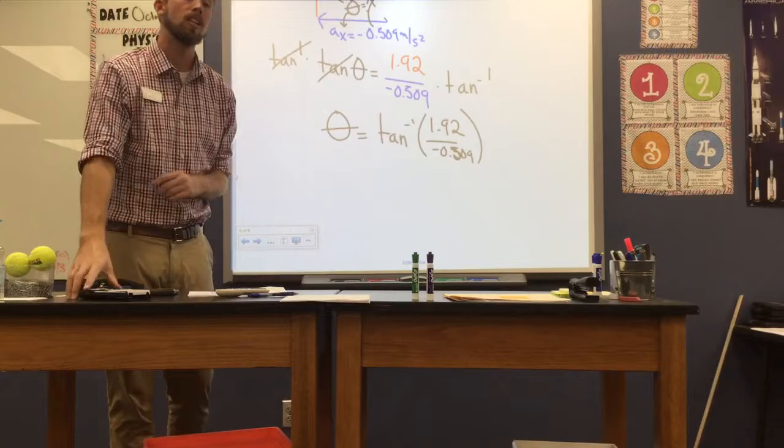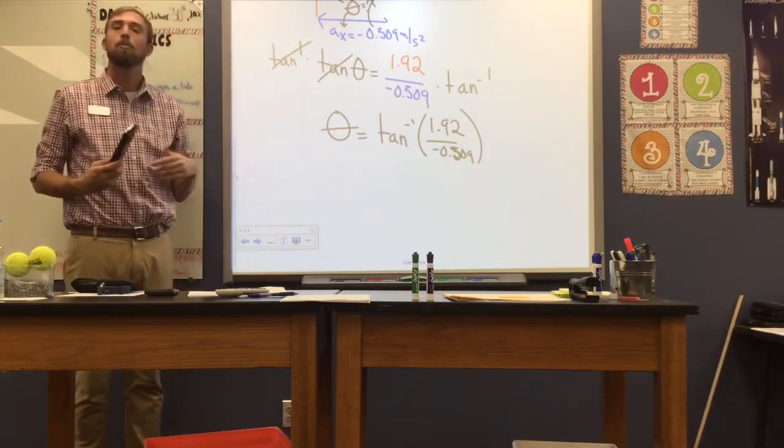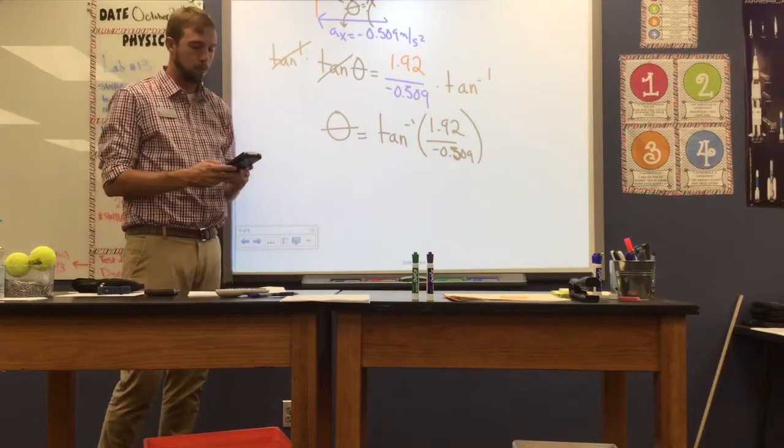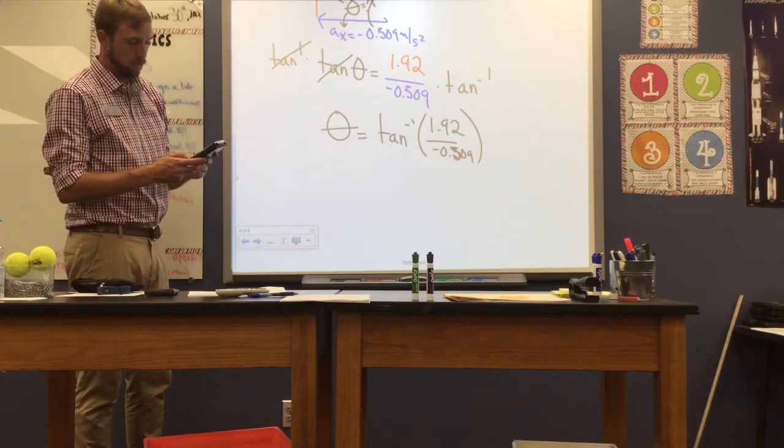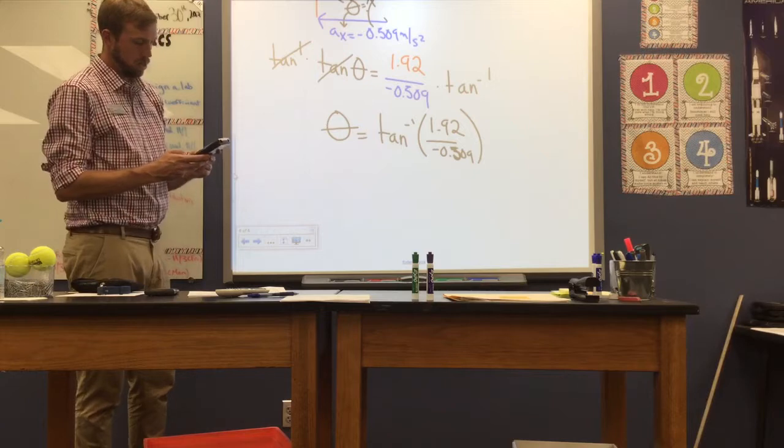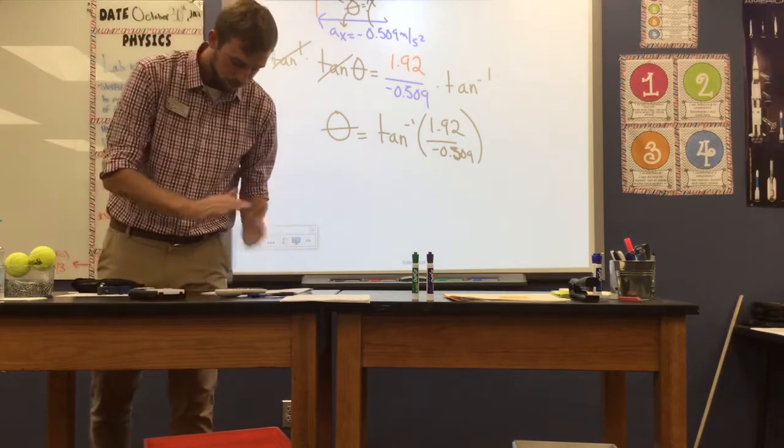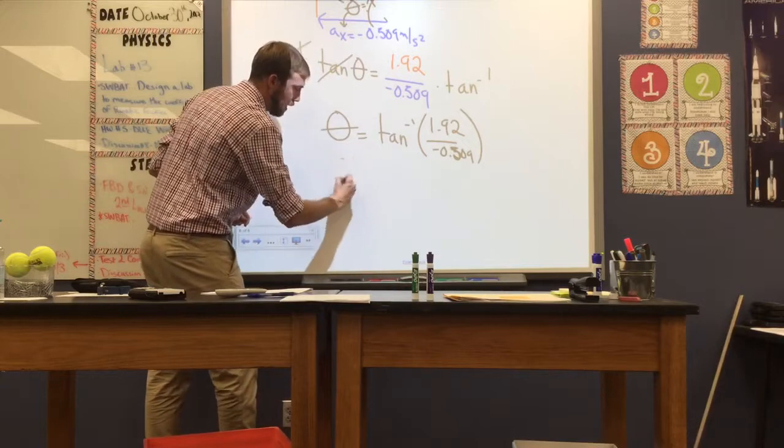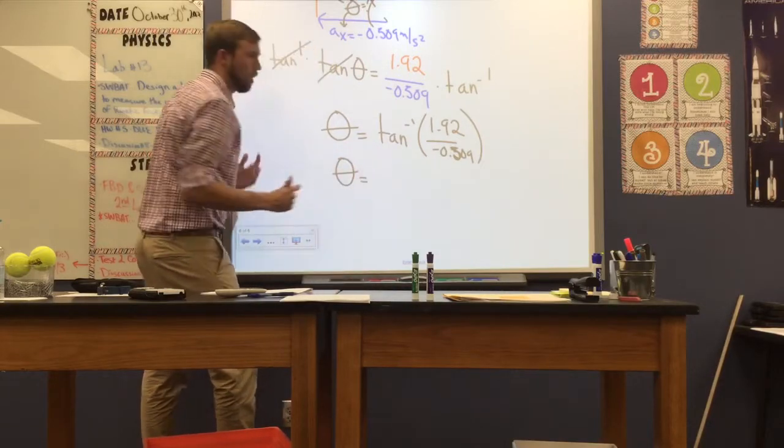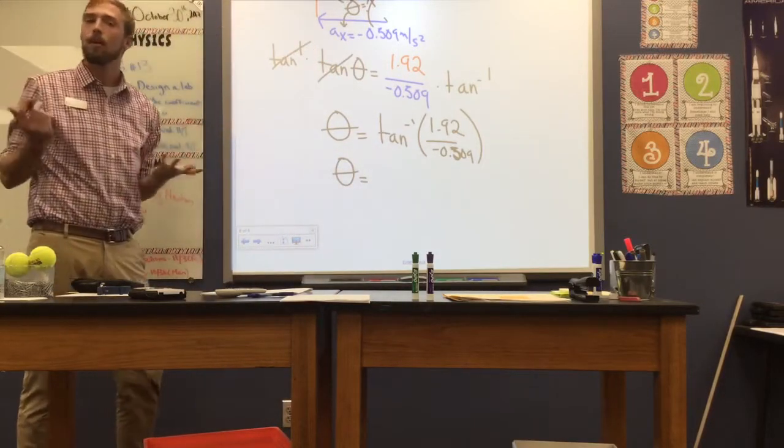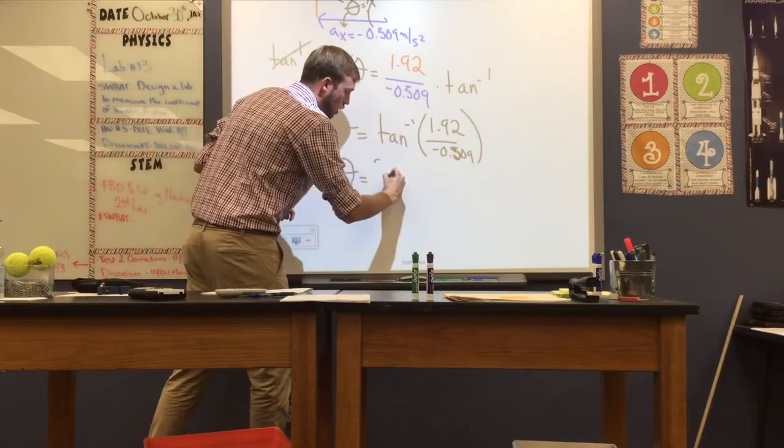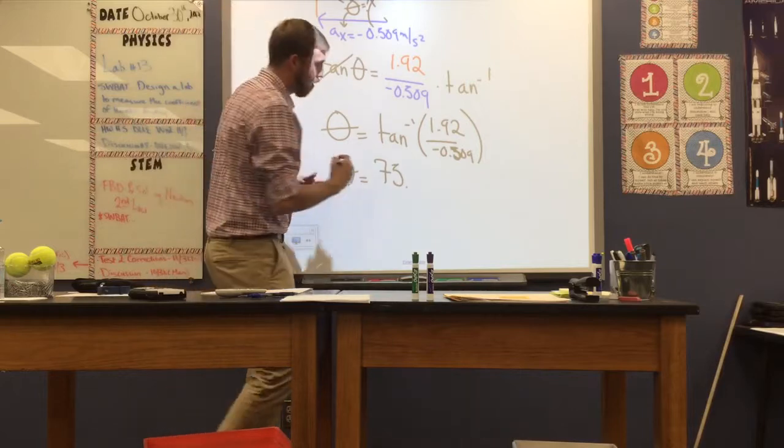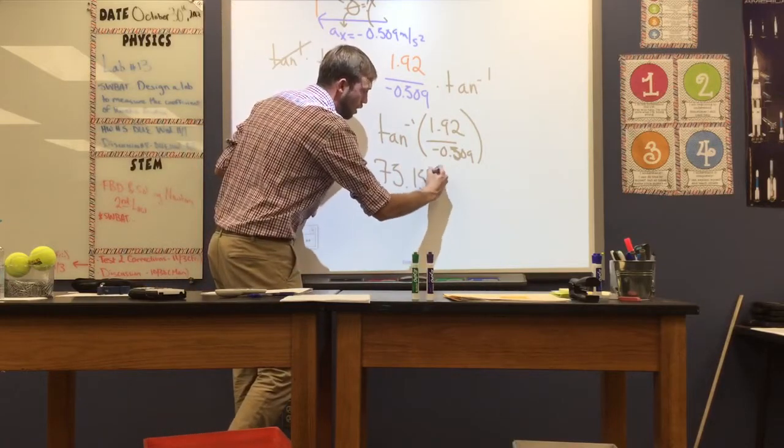So remember, when you plug this in, do not plug in just tangent. We have to plug in an inverse. So it looks like on your calculator, second and then tangent. Make sure the negative one exponent is there. Now you're going to get a value in your calculator that might be positive or negative, depending on how your calculator is oriented to calculate direction.